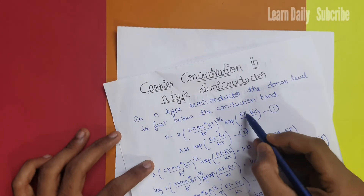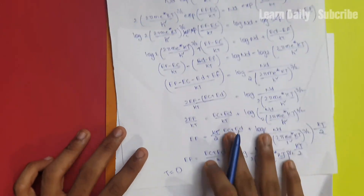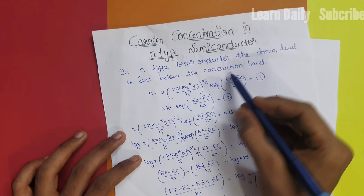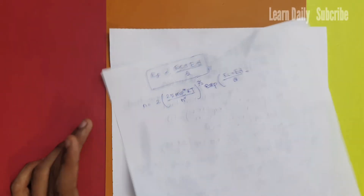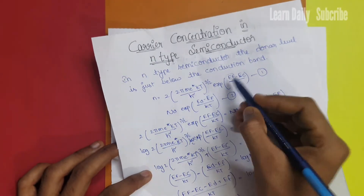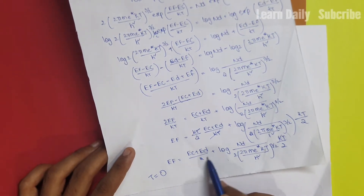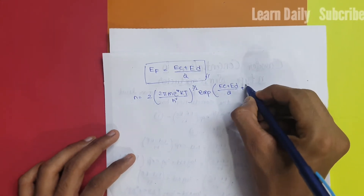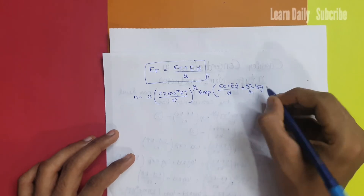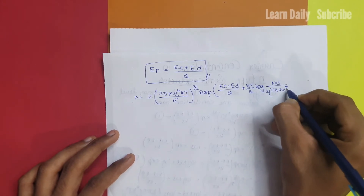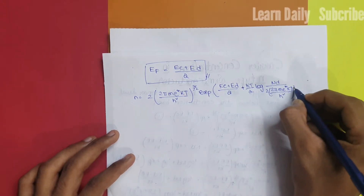First equation: at T equal to 0, the value of Ef substituted gives 2 into (2π me* kT / h²), with the exponential of Ef equal to (Ec plus Ed) by 2 plus kT by 2 times log of Nd divided by 2 into (2π me* kT / h²)^(3/2).